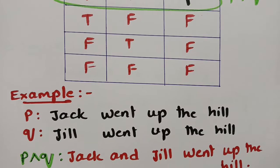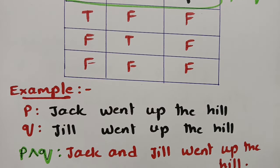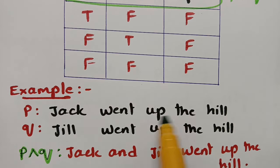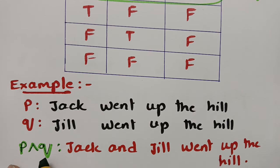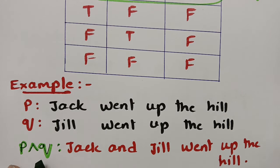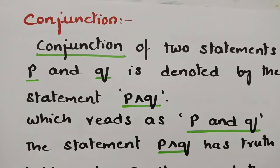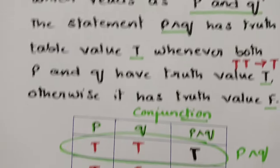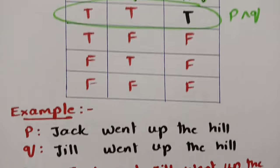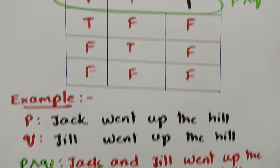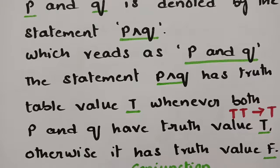You have to keep in mind: if there are two truths, the answer will be true for P ∧ Q. The example: P is 'Jack went up the hill,' Q is 'Jill went up the hill.' So P and Q gives: 'Jack and Jill went up the hill.' This is the definition of conjunction, the truth table, and the example — write it clearly in the exam.